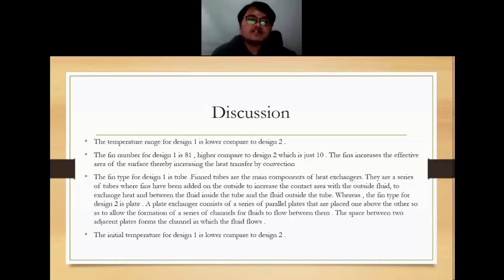The first discussion point is the temperature range for design 1 is lower compared to design 2. Second, the fin number for design 1 is 81, higher compared to design 2 which is 10. This shows that increasing the fins increases the effective area of the surface, thereby increasing heat dissipation by convection.